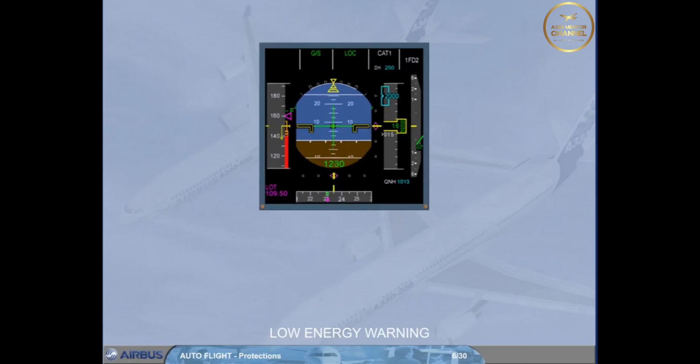It drives the pilot's eyes to the speed scale so as to readjust thrust, for example. This warning takes into account the aircraft deceleration rate and current flight path angle, which explains the low energy wording.